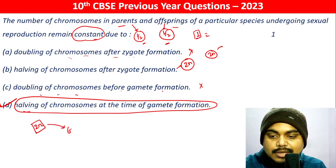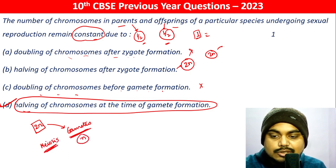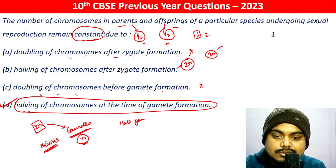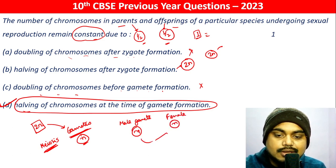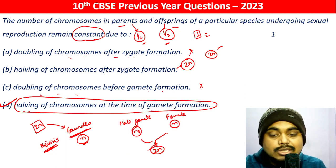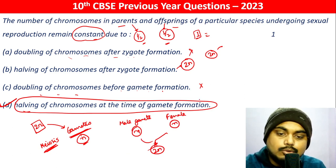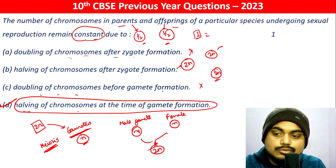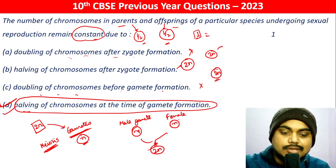Basically, the 2n chromosomes — when gametes are formed, they are formed through meiosis, and the gamete formed through meiosis is actually n. That is why the male gamete has n chromosomes, the female also has n chromosomes, and when the zygote is formed it has 2n chromosomes. The body — male or female — both have 2n chromosomes. So therefore, D is the answer.